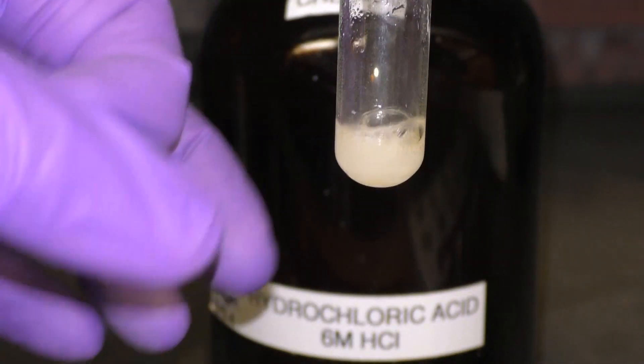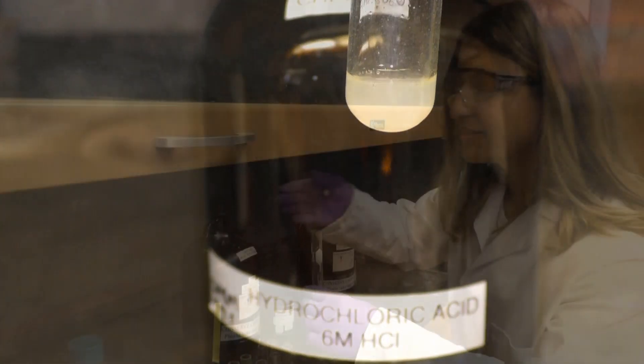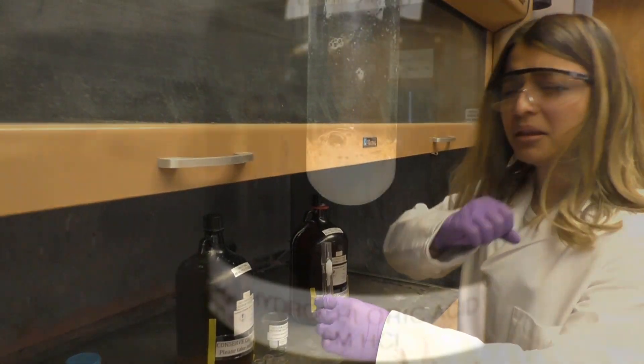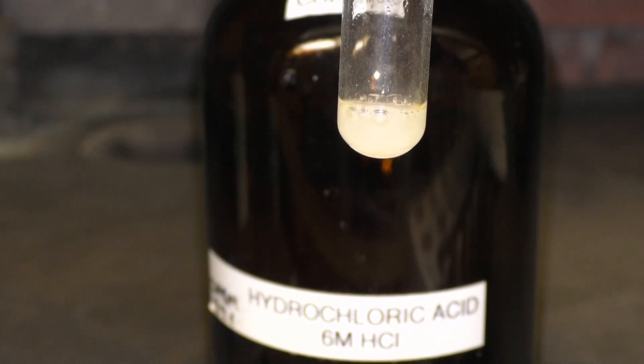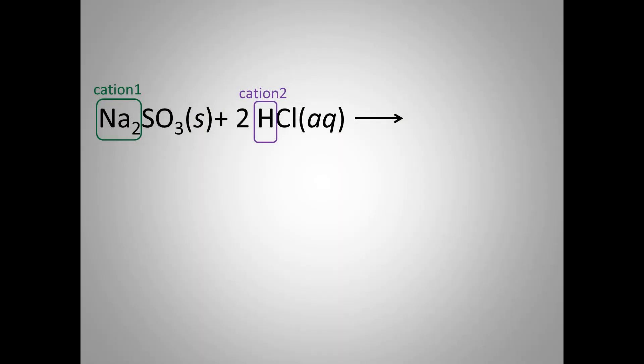You can tell by the bubbling that a gas is forming. Now what could this gas be? Our gas is colorless and has a choking odor, so don't forget to waft the gas towards you to smell it. If you refer once again to table 5.1, the most likely product is SO2 gas. Now how could that have formed?